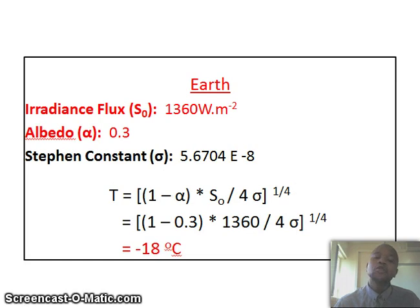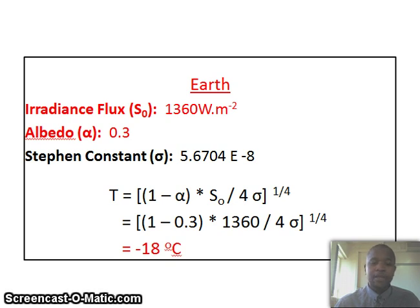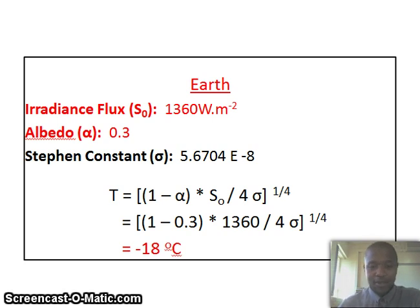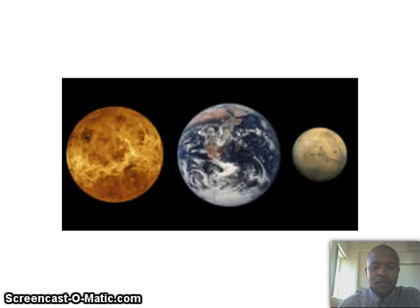We substitute the variables to calculate what this would be for the Earth specifically. The irradiance flux is the energy received per square meter on Earth from the sun. When we plug in these variables, we come to the conclusion that the temperature of the Earth would be minus 18 degrees Celsius — as if the Earth were a ball of rock with no atmosphere, oceans, or anything else.